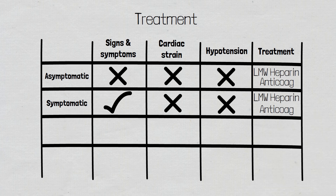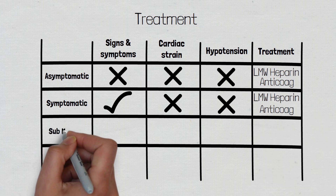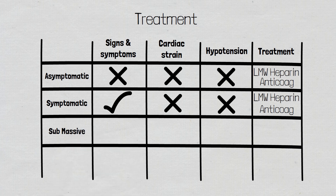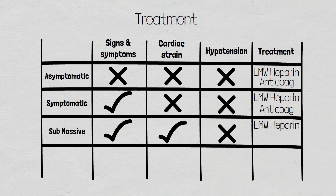The next category is a submassive pulmonary embolism. Patients will present with symptoms and evidence of heart strain such as raised troponins or raised brain natriuretic peptides. They may also have a right ventricular strain pattern on their ECG, but they will not be hypotensive. These patients may need to be managed in a high dependency ward and will be treated with heparin and an anticoagulant.